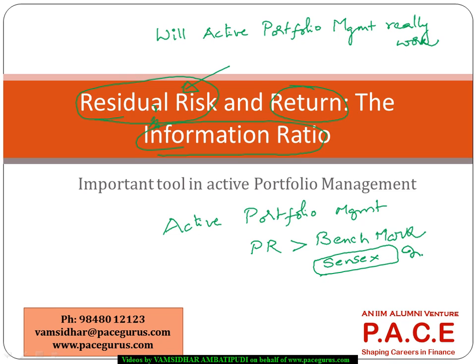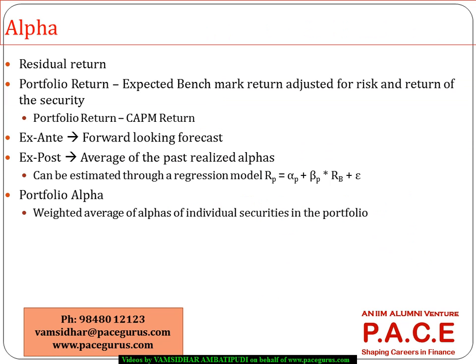if any particular index is the benchmark, all I want to know is: if I am generating my own portfolio, obviously I am taking some additional risk. So can this additional risk result in some additional return? That is what we are trying to look at — assessing residual risk and return, and then computing the information ratio to identify the optimal level of risk and optimal level of return.